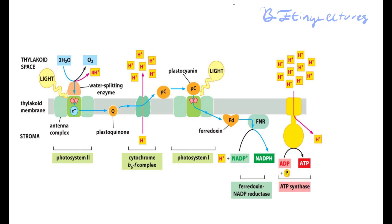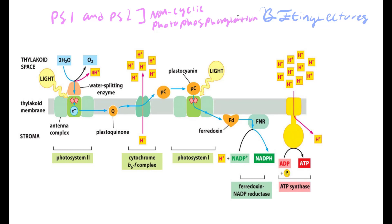If we combine PS1 and PS2, we get non-cyclic photophosphorylation. Light activates the antenna complex, the chlorophylls transfer electrons, and chlorophyll dimers form in the reaction center. On top of the reaction center an enzyme splits water, creating oxygen and protons in the lumen.